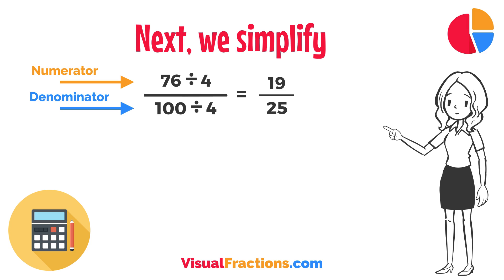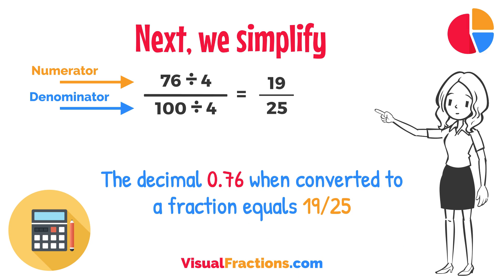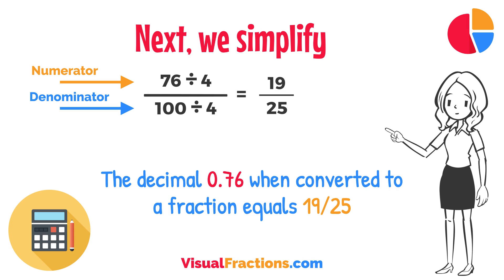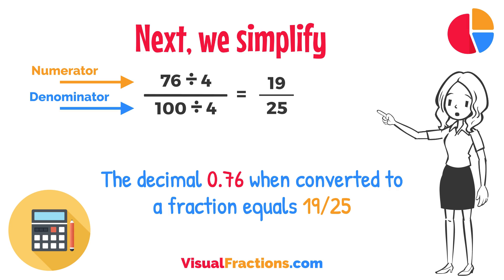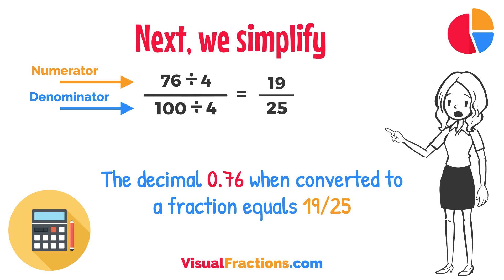And there you have it. The decimal 0.76 when converted to a fraction equals 19/25. This fraction is in its simplest form and cannot be further simplified.